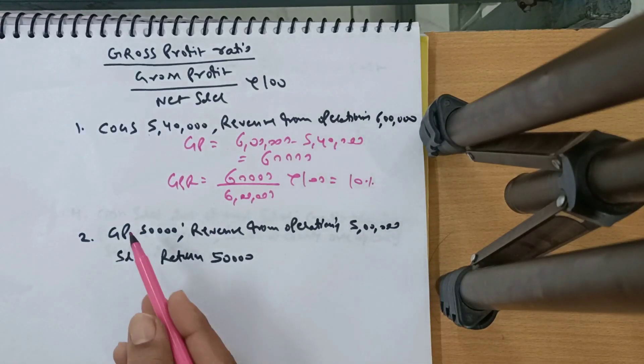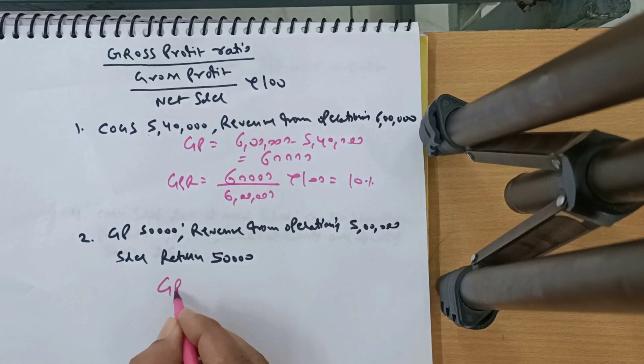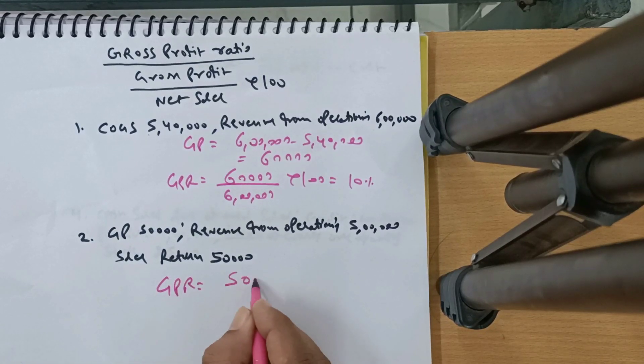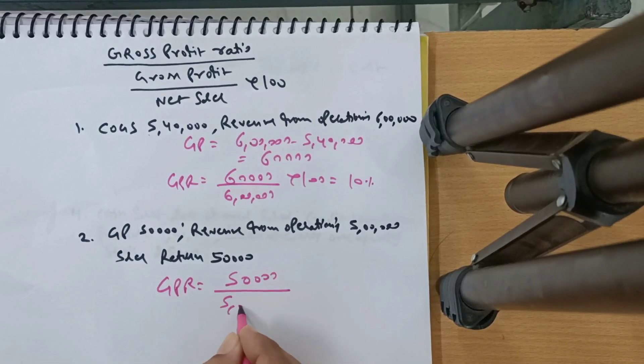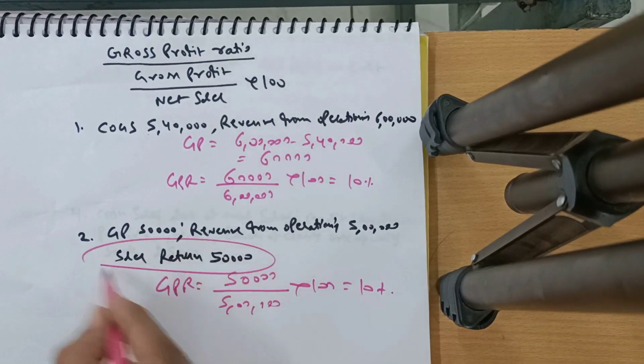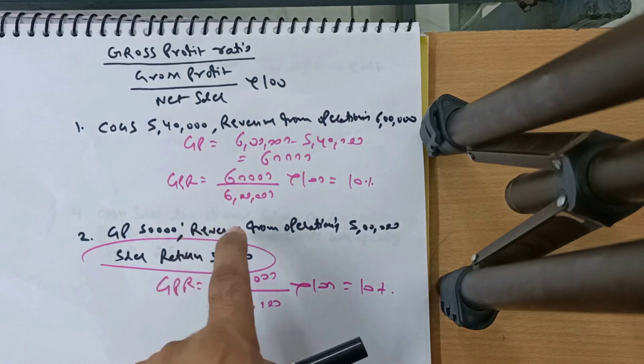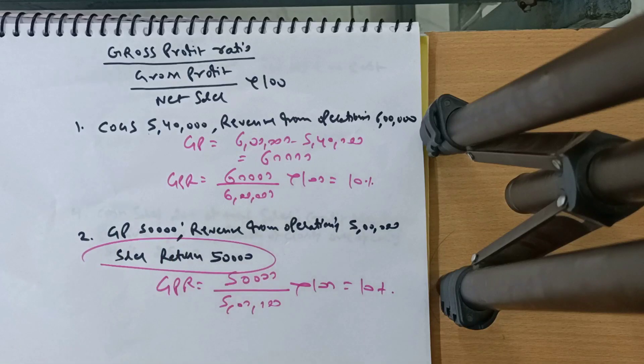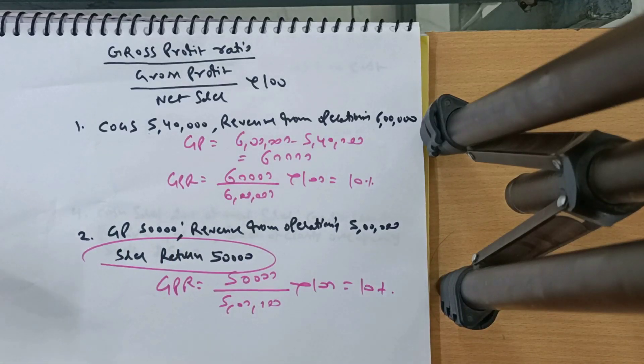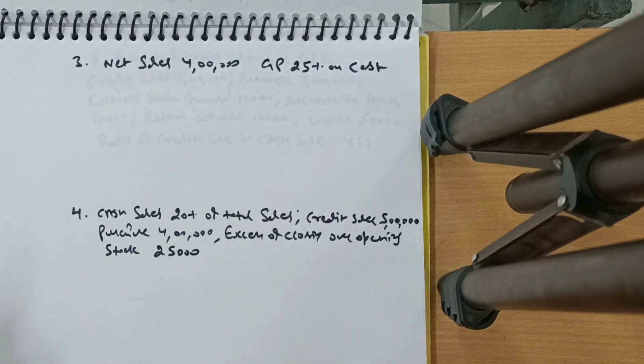Next question. GP given, Revenue from Operation given, sales return also given. Formula is Gross Profit upon Net Sales, that is 5 lakhs, 5 lakhs into 100, that's 10%. Now some children will ask, sir, why sales return given? I have told you again, revenue from operation already is Net Sales. So if it is Net Sales, then you don't need sales return.